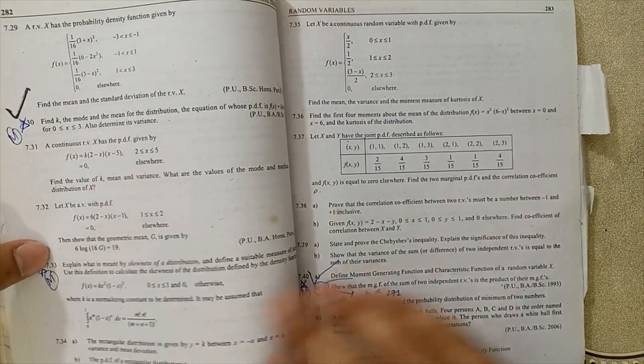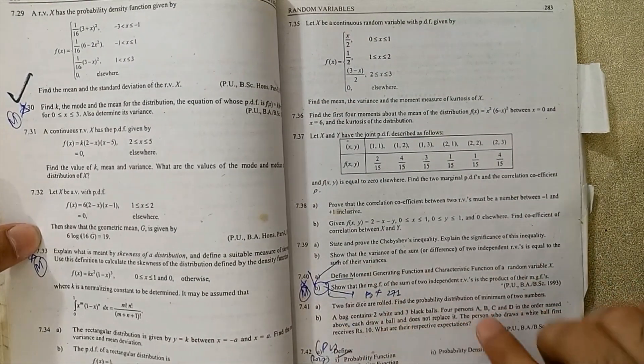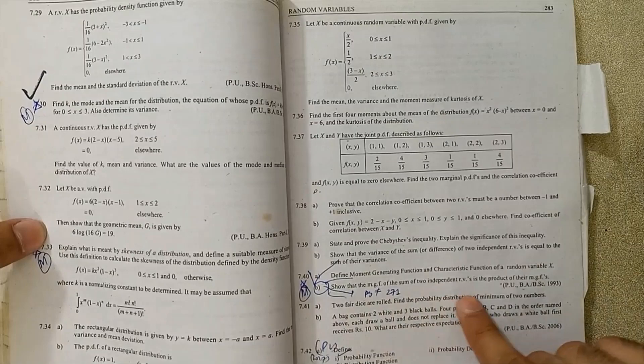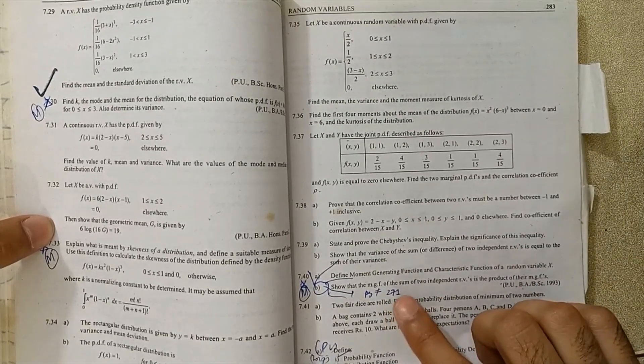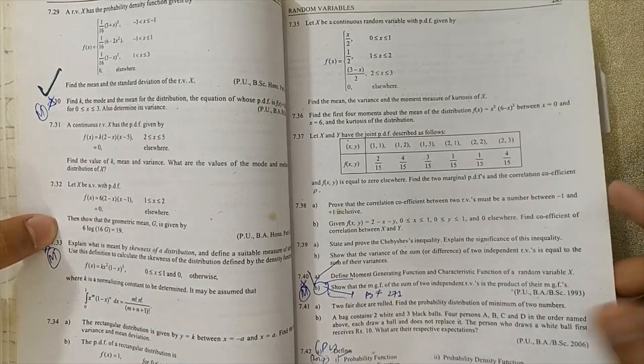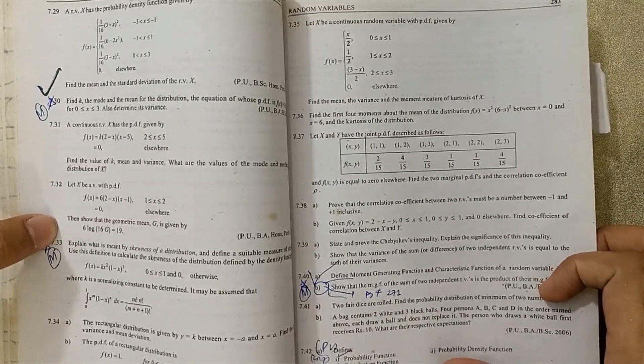7.30, 7.33, 7.40 - show that MGF of sum of independent variables. MGF topic is very important. At page 271, the answer is given in the book. Sample photo is very important.